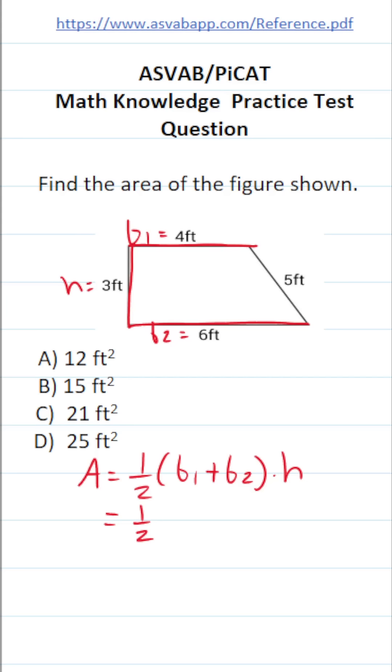So with all those parts identified, let's go ahead and plug them into the formula and solve accordingly. This becomes one half times 4 plus 6 times 3. And let's keep working this out.